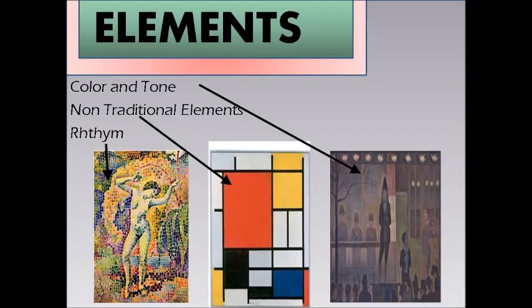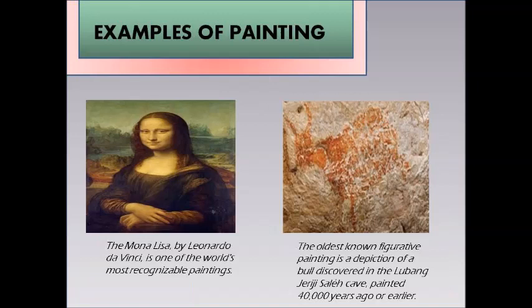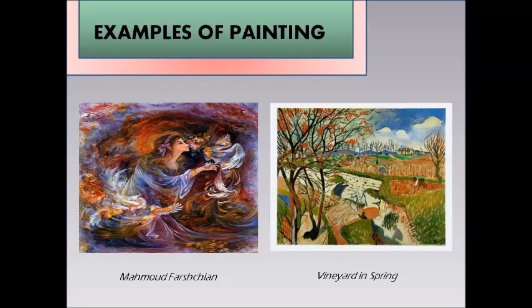Examples of painting include the Mona Lisa by Leonardo da Vinci, one of the world's most recognizable paintings. To the right is the oldest known figurative painting — a depiction of a bull discovered in Lubang Jiriji Salikiv, painted 40,000 years ago or earlier. We also have Mahmood Farishan and Van Yard in Spring.